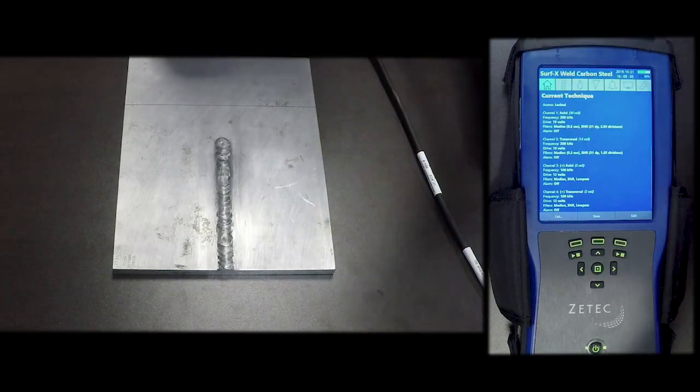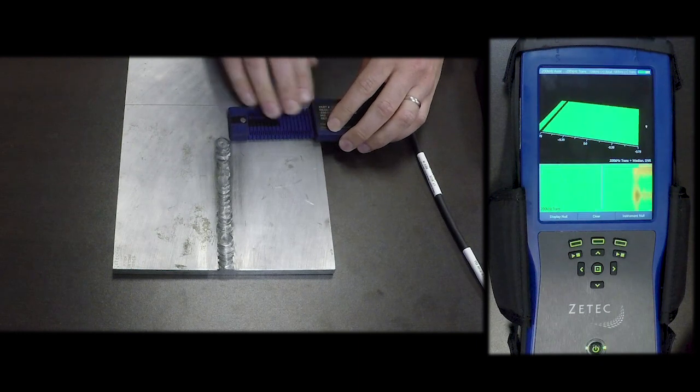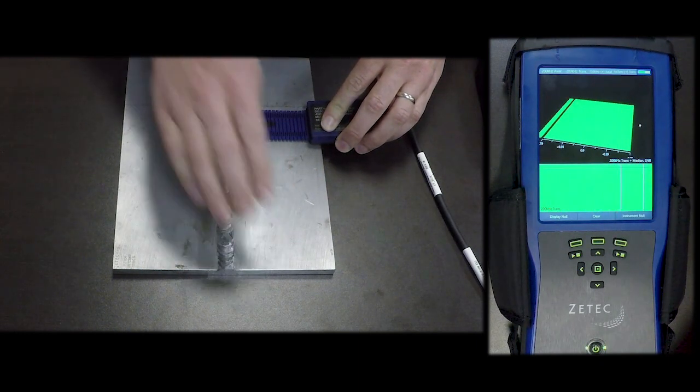So to do this inspection you just hit start, and I will run across the heat affected zone and into the toe.